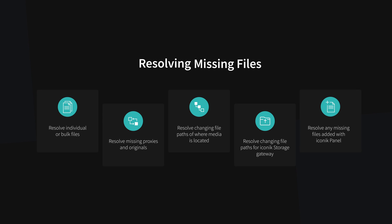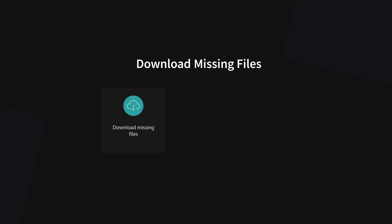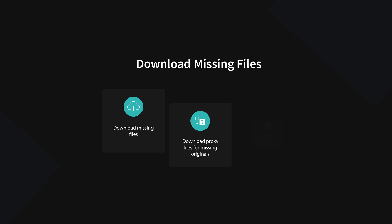You can resolve missing files regardless of how a project file has been shared. If the files have been added to the project through the Iconic panel, they can be found again. The Iconic panel will also allow you to resolve missing files by downloading the contents you need — download files from Iconic if they're missing from a local computer, download proxies for missing original files as you would when working remotely away from the original storage, and download the original files for missing proxies, as in the case of a remote editor who creates a project with Iconic proxies then shares it with a user who has the original files locally.